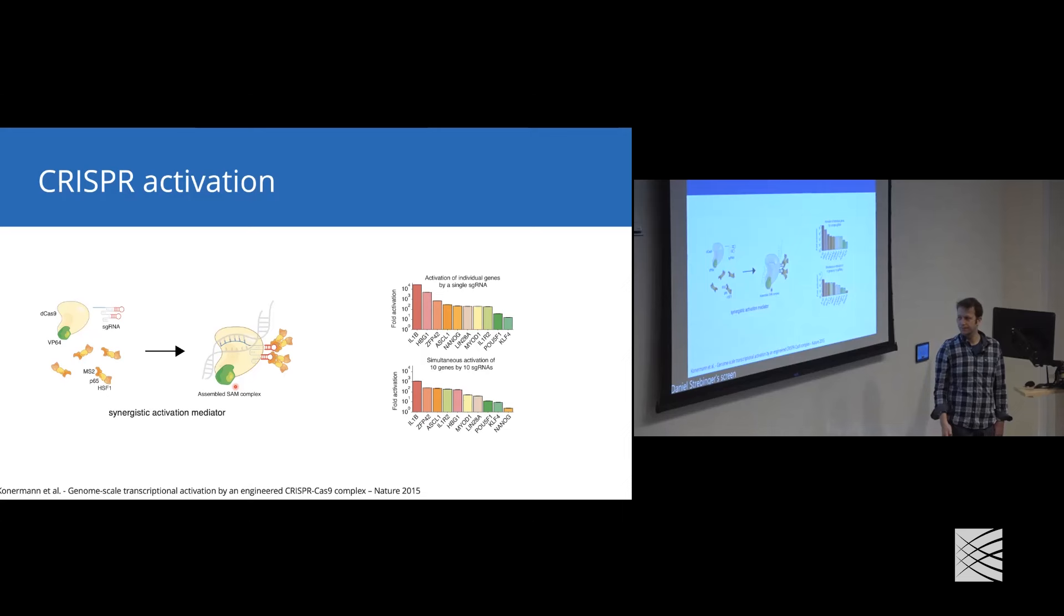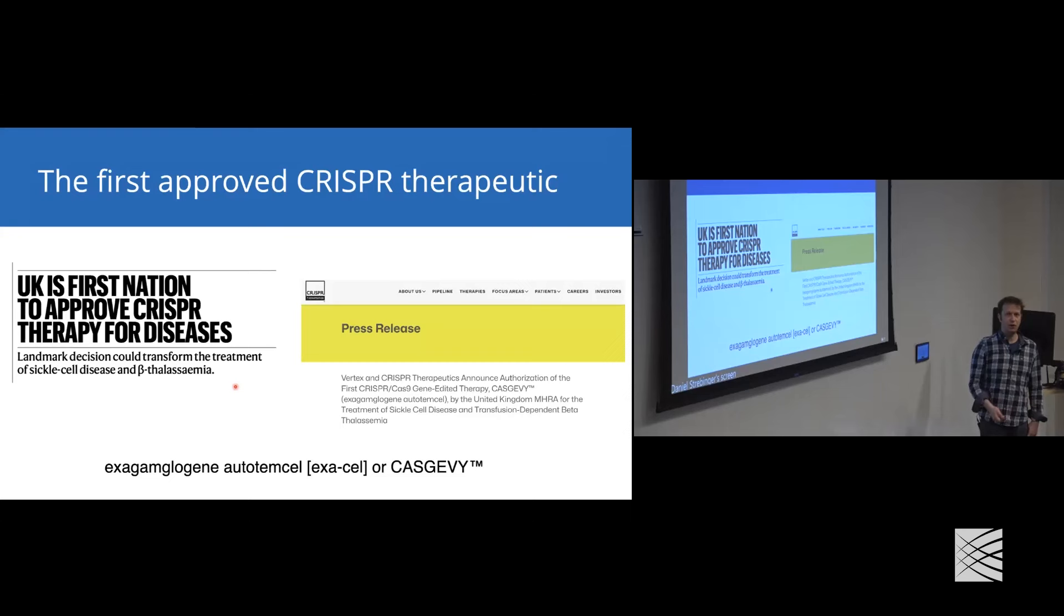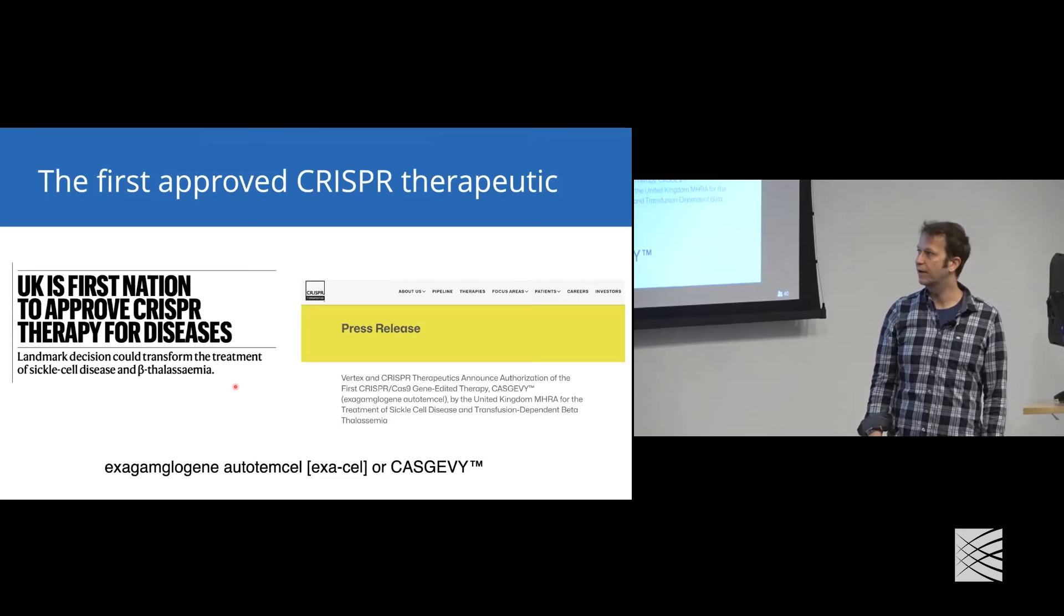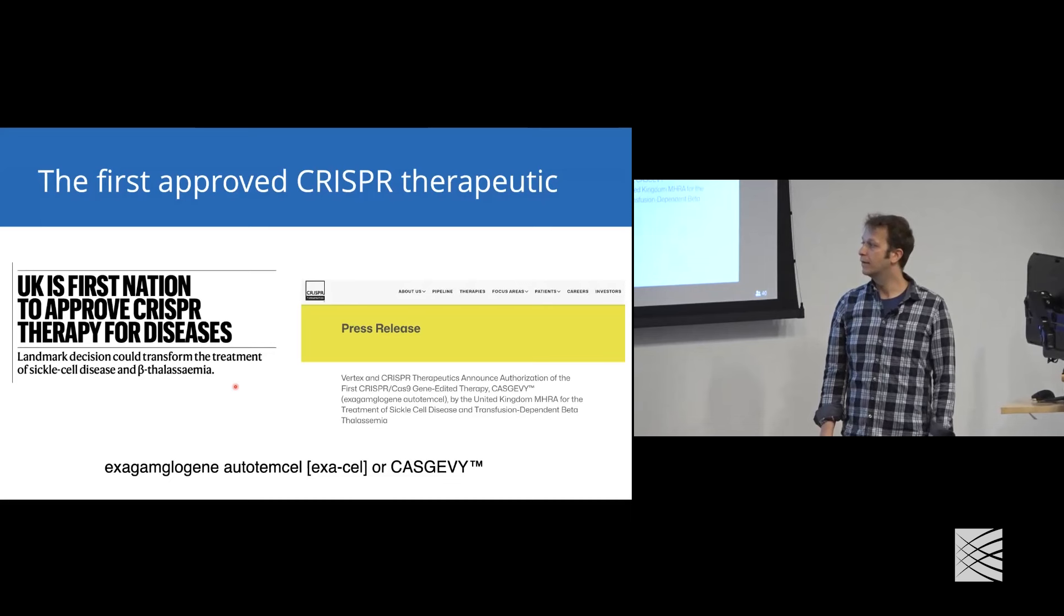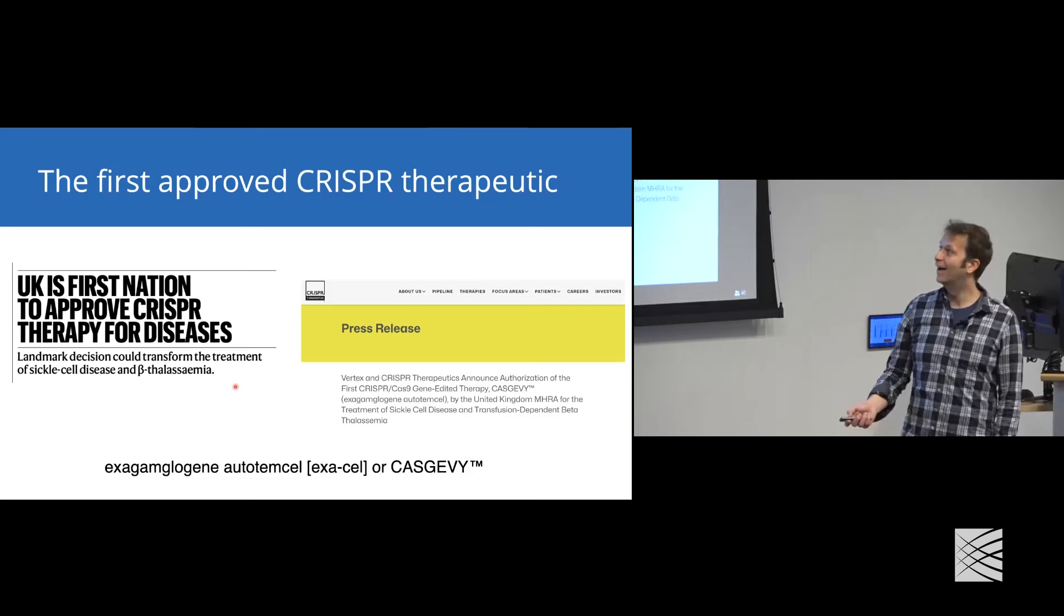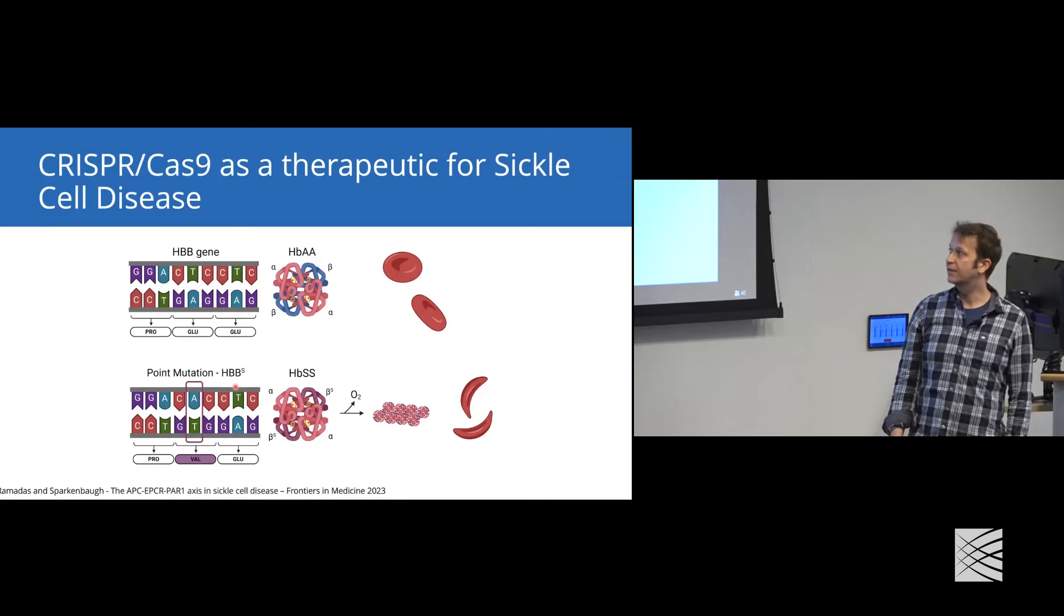I'll use the last couple of minutes to talk about the first approved CRISPR therapeutic and how we got there. The UK just approved the first CRISPR therapeutic for sickle cell and beta thalassemia. The therapeutic is called Casgevy or exagamglogene autotemcel.